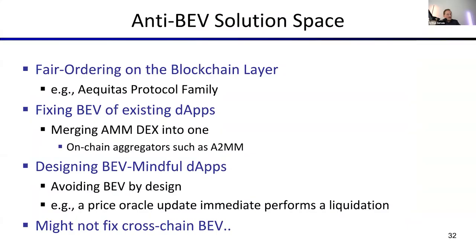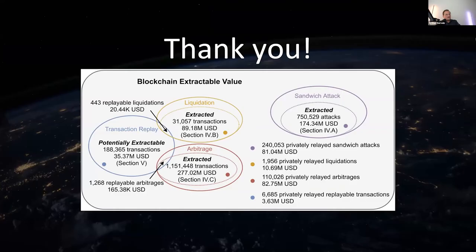There are various ways to mitigate BEV. Fair ordering on the blockchain layer is promising. We can also design apps to be more BEV-friendly: for example, if a trader opens an arbitrage opportunity, why not take it themselves rather than leaving it to others? We can design BEV-mindful DEXes to fix BEV at least on a single blockchain, though cross-chain BEV is harder to fix. Thank you — and here is an overview of the values extracted by different techniques.